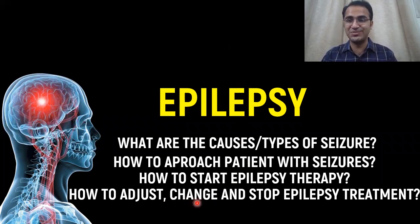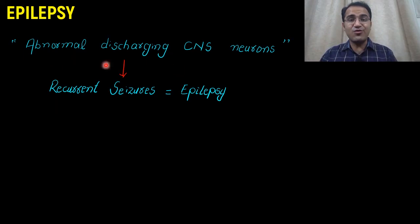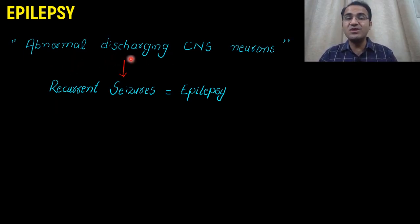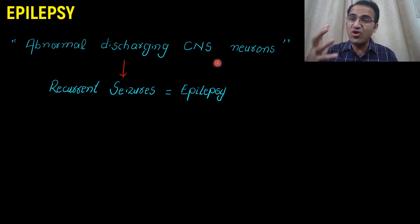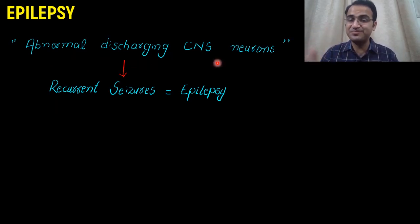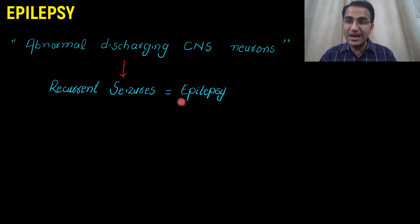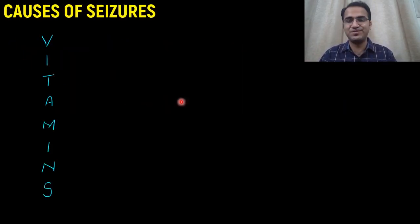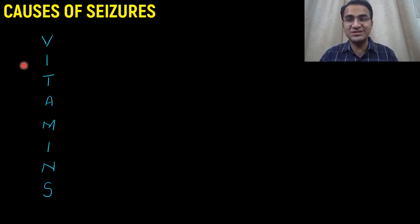First of all, what is a seizure? A seizure is basically abnormal discharging of CNS neurons that causes abnormal muscular contraction and muscular excitation. If the patient is having recurrent seizures, that is called epilepsy. The causes of seizures can be easily memorized by the mnemonic VITAMINS.